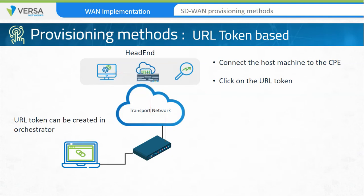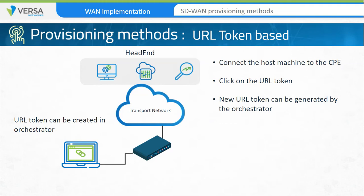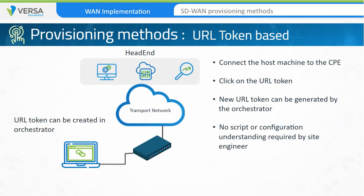If there is any change in the design or IP schema, the network administrator can provide a new URL token generated by the orchestrator to the site engineer. The engineer will then click on the new URL to start the bootstrapping process. This process doesn't require site engineers to understand any scripts or configuration. The site engineer or customer can connect over the LAN to the device and initiate the device onboarding process by simply clicking on a link.